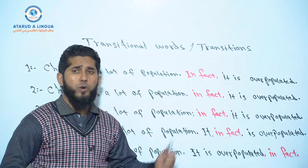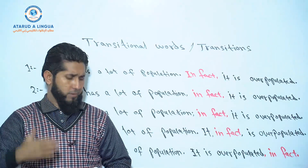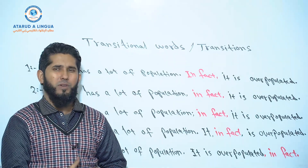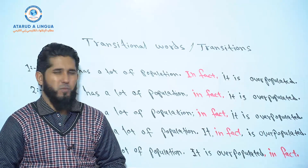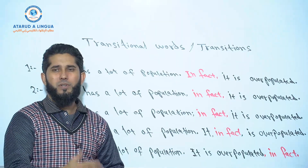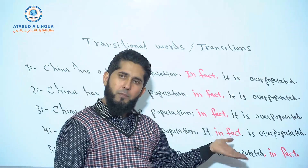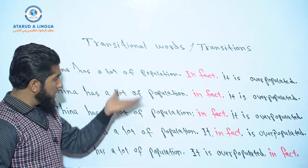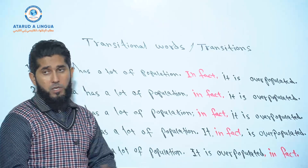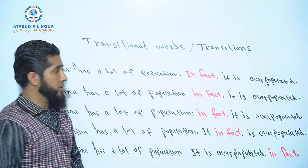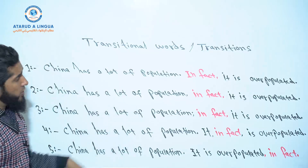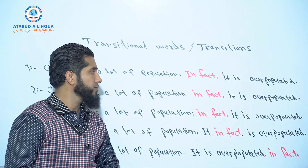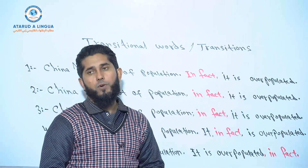In spoken English, there are two ways where you just need a comma, a semicolon, or a full stop. In spoken English nobody really notices the difference among the other ways. But in written English there are five ways, and in spoken English there are three ways. Here is one example sentence: 'China has a lot of population. In fact, it is overpopulated.'